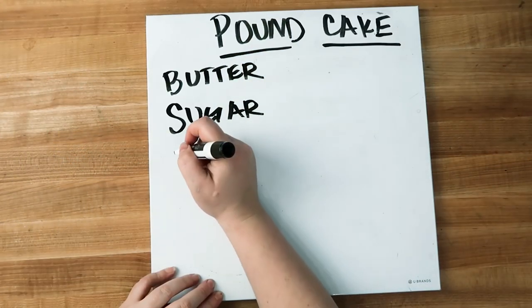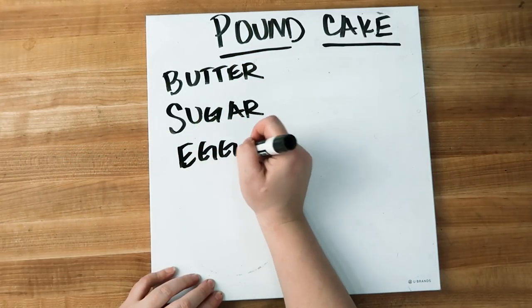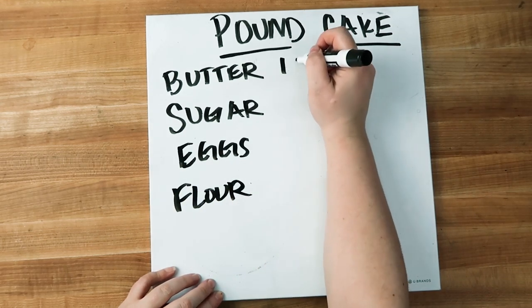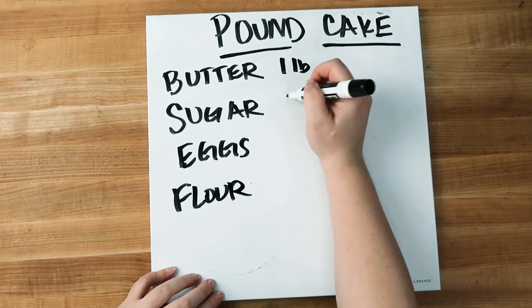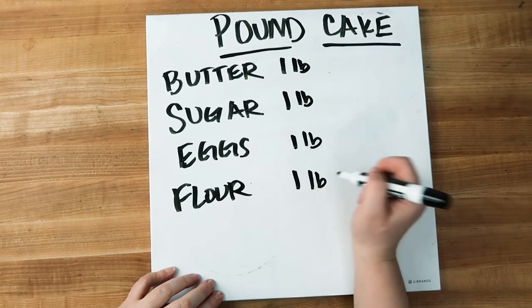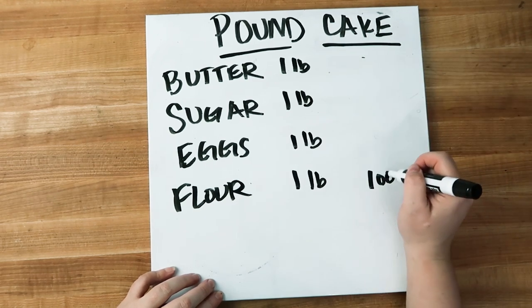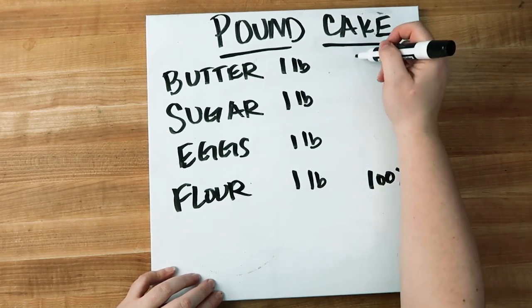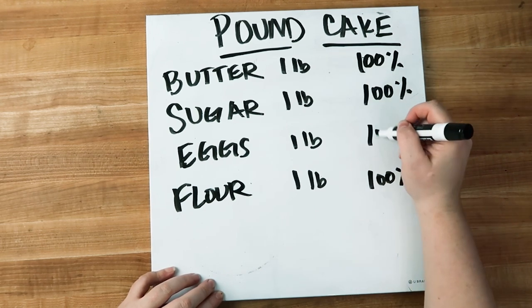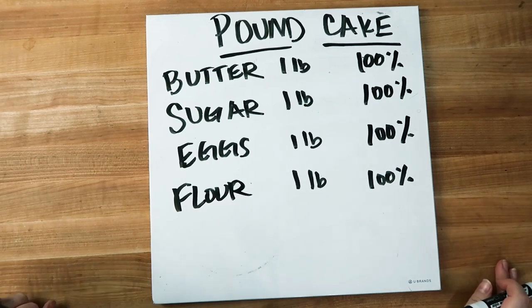I always like to start with the easy example of a pound cake. The most basic recipe for a pound cake calls for a pound of butter, a pound of sugar, a pound of eggs, and a pound of flour — all ingredients weigh exactly the same. Since our flour is set at 100 percent at one pound, which is equivalent to 450 grams, every other ingredient is also going to equal 100 percent in baker's percentages because those weights are equal.